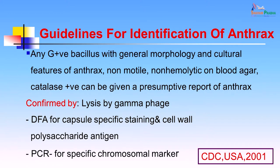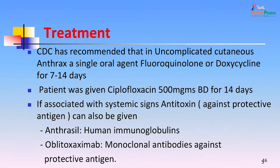Since all these were positive in this patient, the patient was labelled as anthrax, which is not very common in this country but there are pockets of endemic foci in India. The CDC has recommended that in uncomplicated cutaneous anthrax, a single oral agent — either a fluoroquinolone or doxycycline — can be used for 7 to 14 days. This patient was given ciprofloxacin 500 milligrams BD for 14 days. If associated with systemic involvement, antitoxins against the protective antigen can also be given; this patient was not given antitoxins because he had no systemic signs.